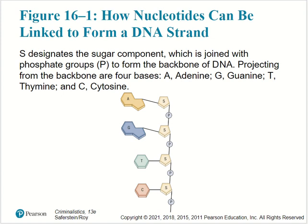Nucleotides can be linked to form a DNA strand. S designates the sugar component, which is joined with a phosphate group, P, to form the backbone of DNA, with four bases — A, G, T, or C — projecting from the backbone in various sequences, not necessarily in any particular order.